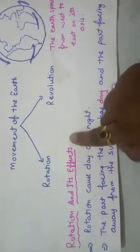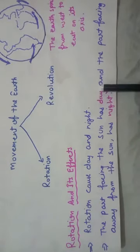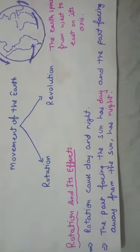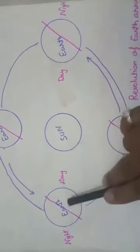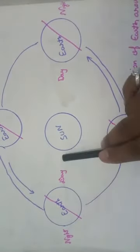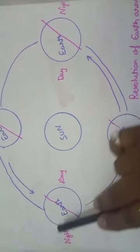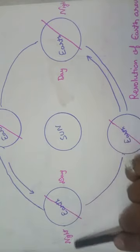Rotation and its effect. Rotation causes day and night. The part facing the sun has day and the part facing away from the sun has night. Let's understand by the picture. This is the sun and the part which is facing the sun, that is day. On the back side, which is the part far away from the sun, that is night.